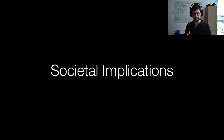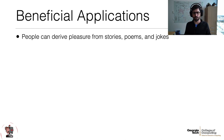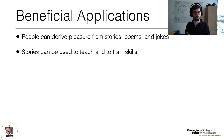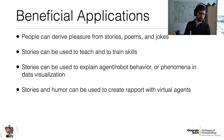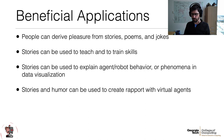Hopefully that gives you an idea of three different ways we can do art in textual form using AI. Let me step back and talk about the bigger picture — the societal implications of creativity in text. Starting with beneficial applications: people derive pleasure from stories, poems, and jokes. Stories can be used to teach and train. Stories can be used to make explanations — little stories about AI behavior, agent behavior, robot behavior. Data visualization is also often talked about in terms of little stories. Humor in particular can be used to create rapport with virtual agents, helping users feel more comfortable with the AI systems they use.